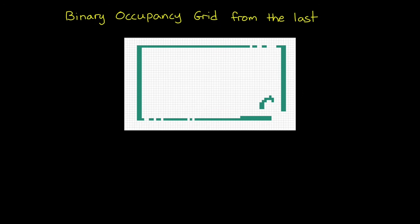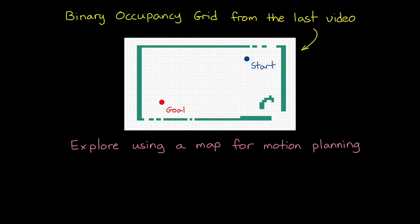In the last video, we covered simultaneous localization and mapping. As the name suggests, we ended up with a map of the environment in the form of a binary occupancy grid. Now for this video, we're going to explore some of the ways that we can use a map like this for motion planning. That is, finding a trajectory through the environment that connects a robot's starting state to some goal state.